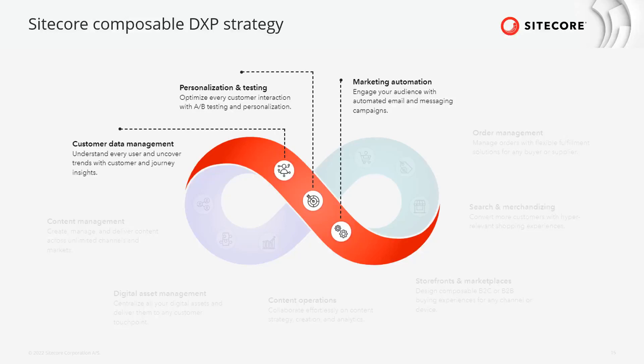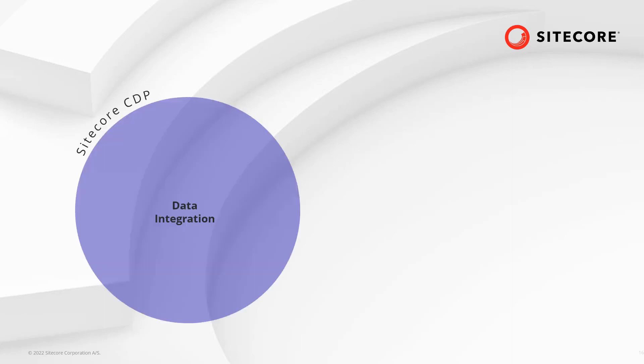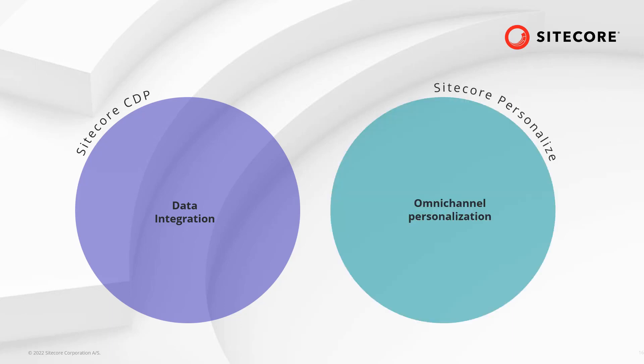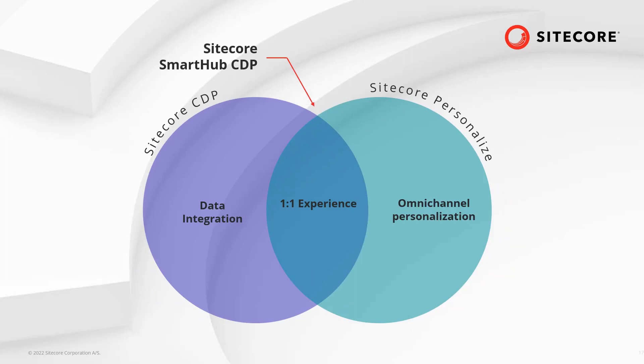CDP's core value is understanding a 360 view of customers, understanding their interactions, and being able to optimize their journey. This is through a first-party cookie, software-as-a-service, scalable, and flexible plug-in solution. Sitecore CDP family includes three packages. Based on client needs, once you acquire a Sitecore CDP license, your Sitecore representative will configure your subscription mode to be one of the following choices: Sitecore CDP only, or Sitecore Personalize, or bringing them together — Sitecore SmartHub CDP.